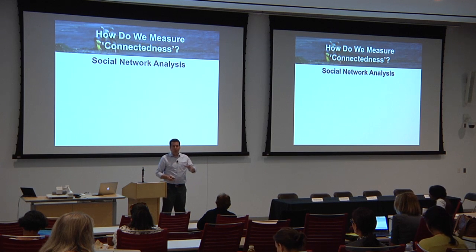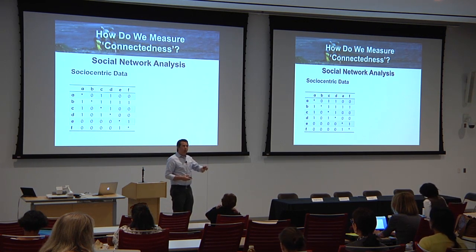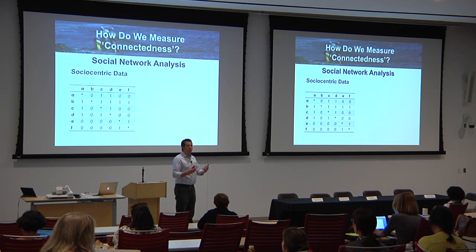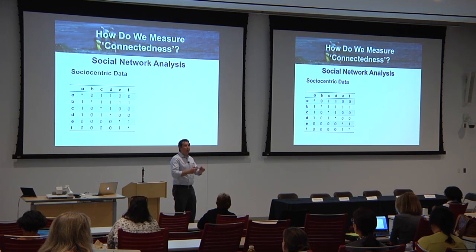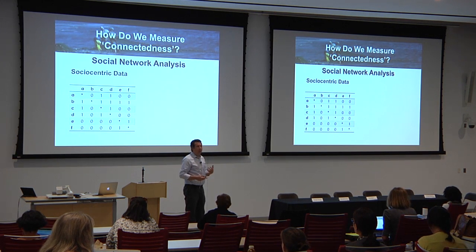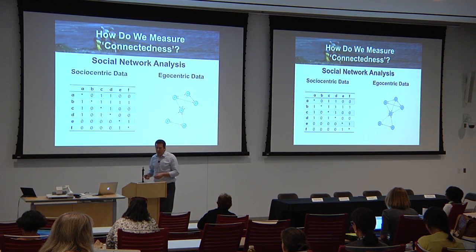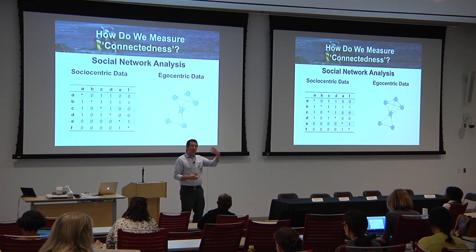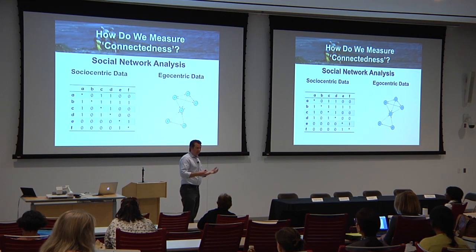Let's talk about some terms used in social network analysis. There are generally two approaches: sociocentric data, otherwise known as whole network analysis — done often in boardrooms and organizations where you know everyone in the network and ask each person how they interact with each other. The problem out in the real world is it's almost impossible to identify a whole network. As an alternative, we have an egocentric approach that produces individual-level data — I can ask someone like Kathy to tell me about people in her network, come up with metrics, then do the same with others, and start to talk about individual variation.